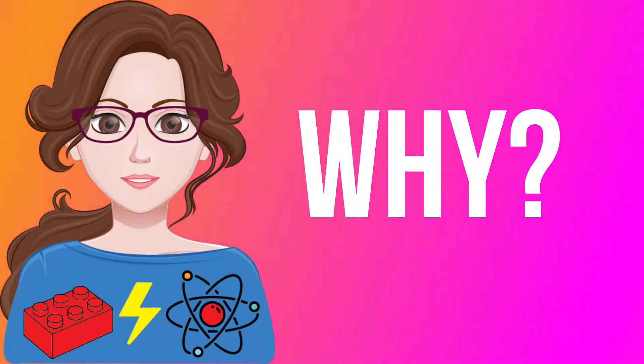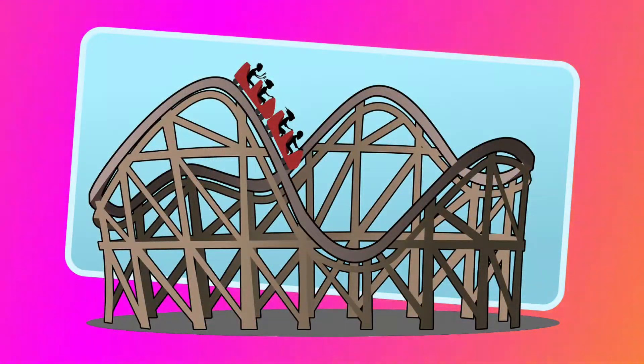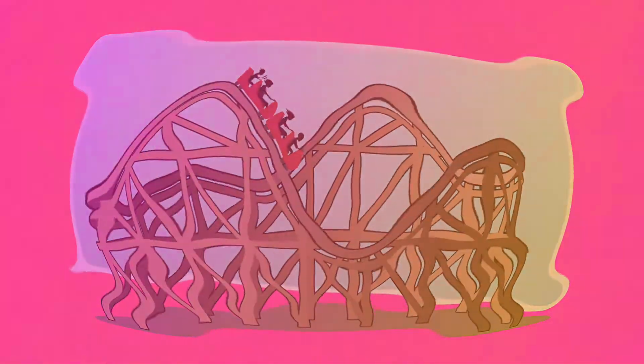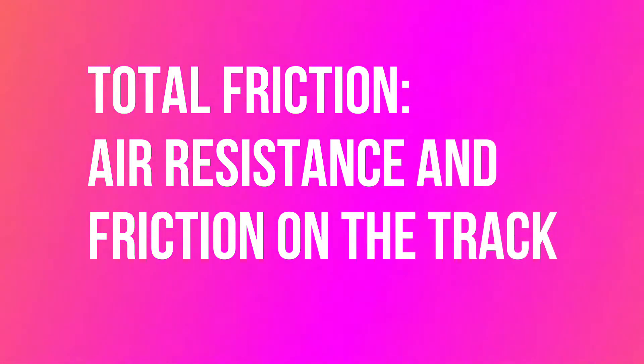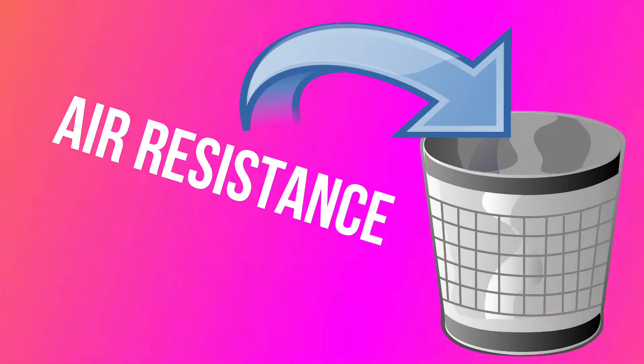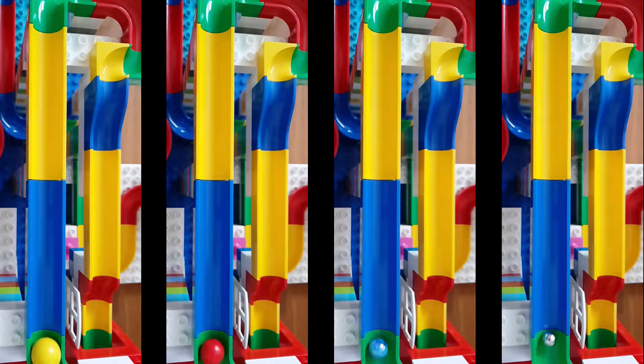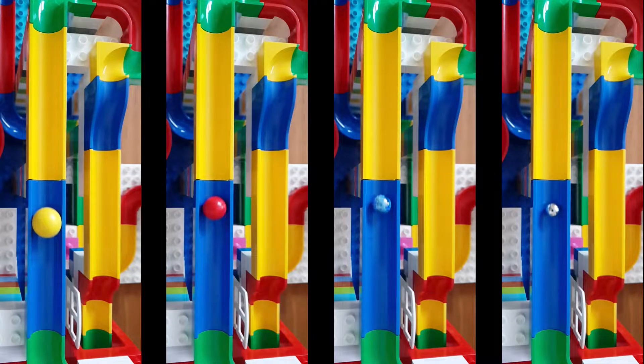From my previous videos, we remember that the ball slows down because of friction, which is a combination of air resistance and contact with the track, which is also called kinetic friction. Air resistance is negligible in this case, so we're left with kinetic friction, which depends on the roughness of the two surfaces in contact and the weight of the ball.